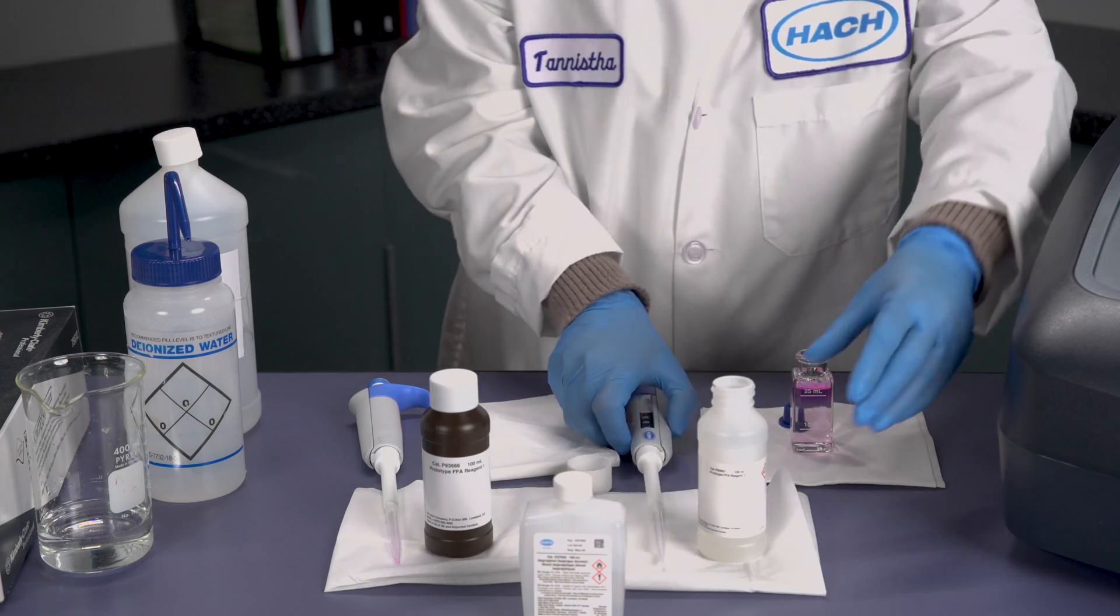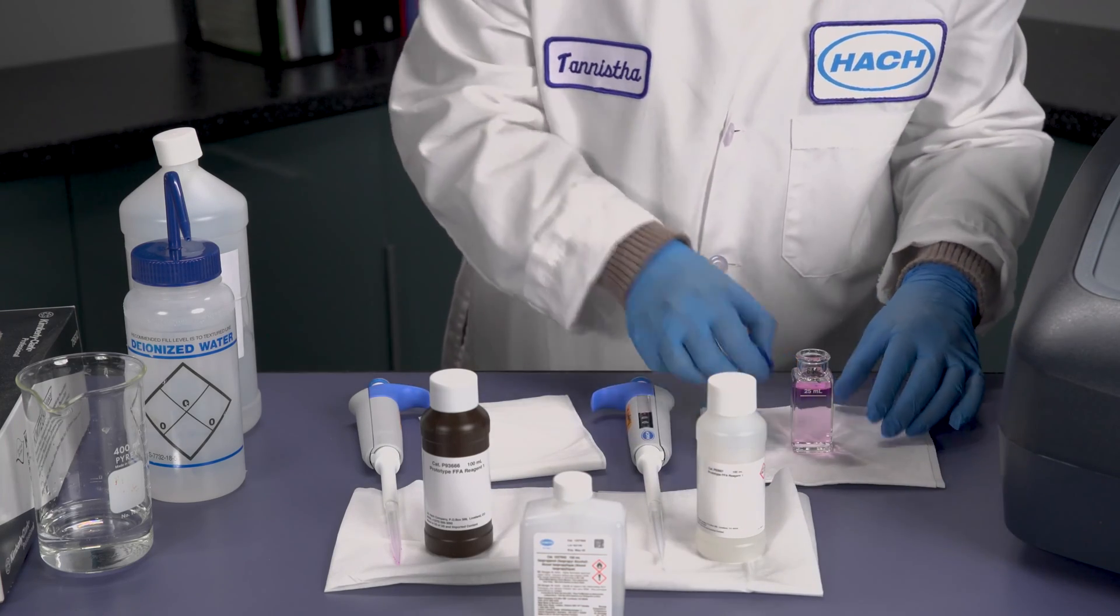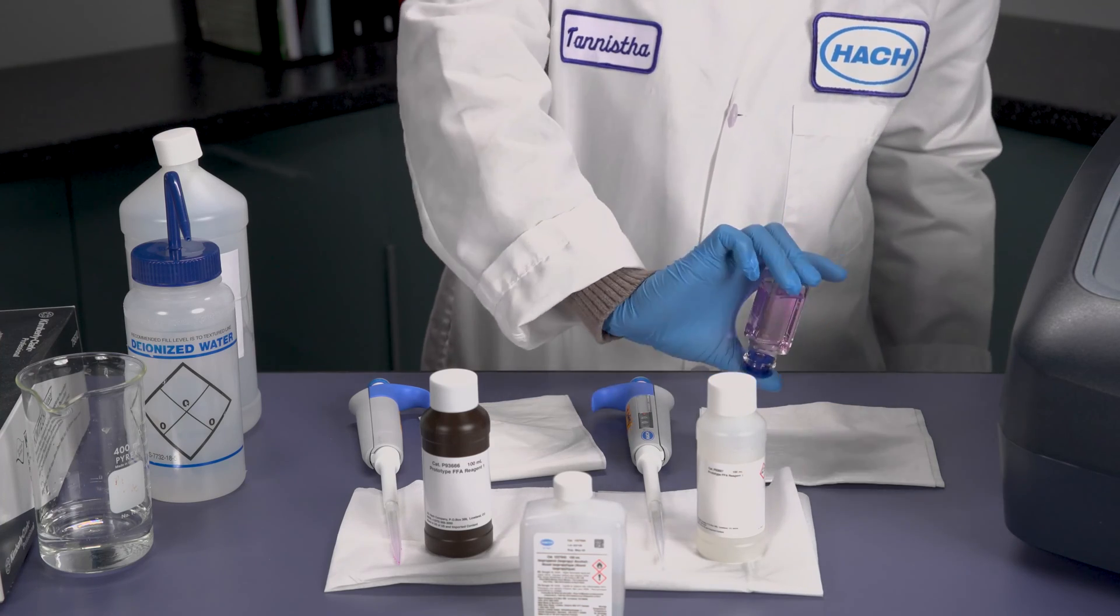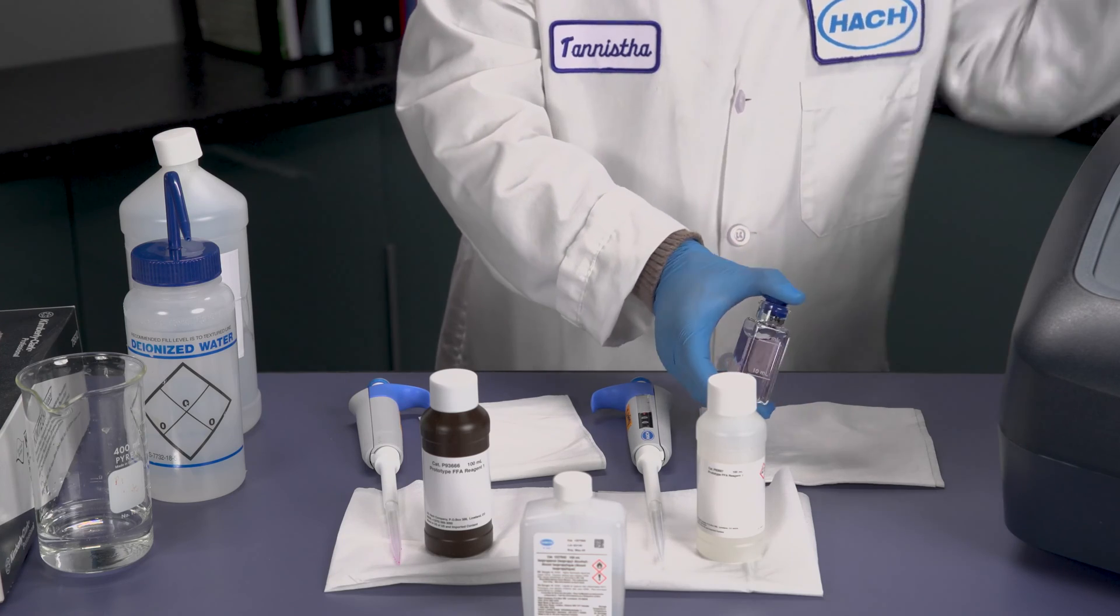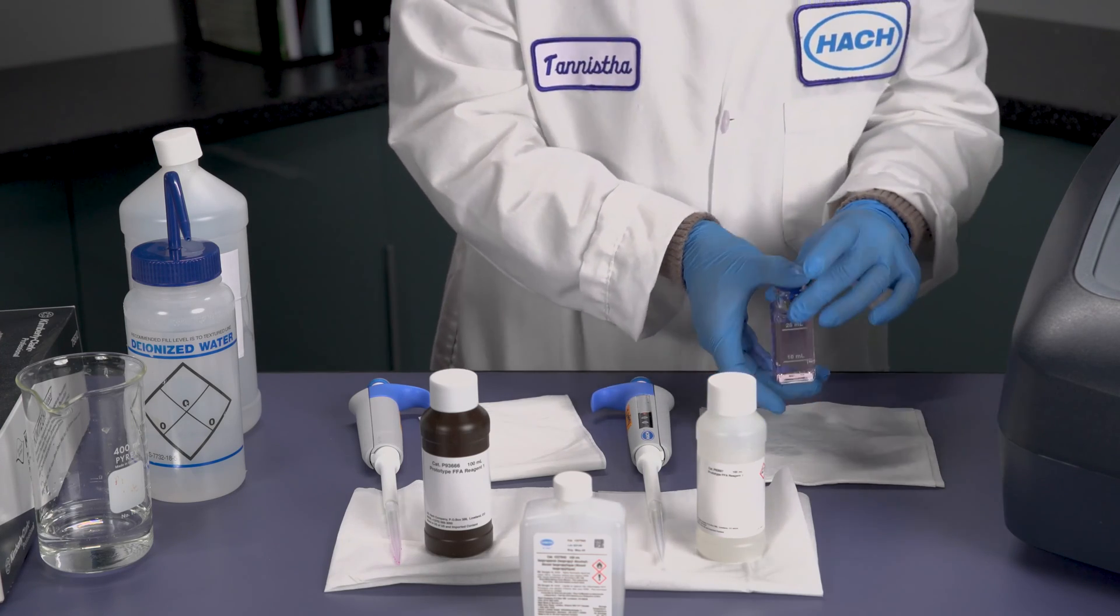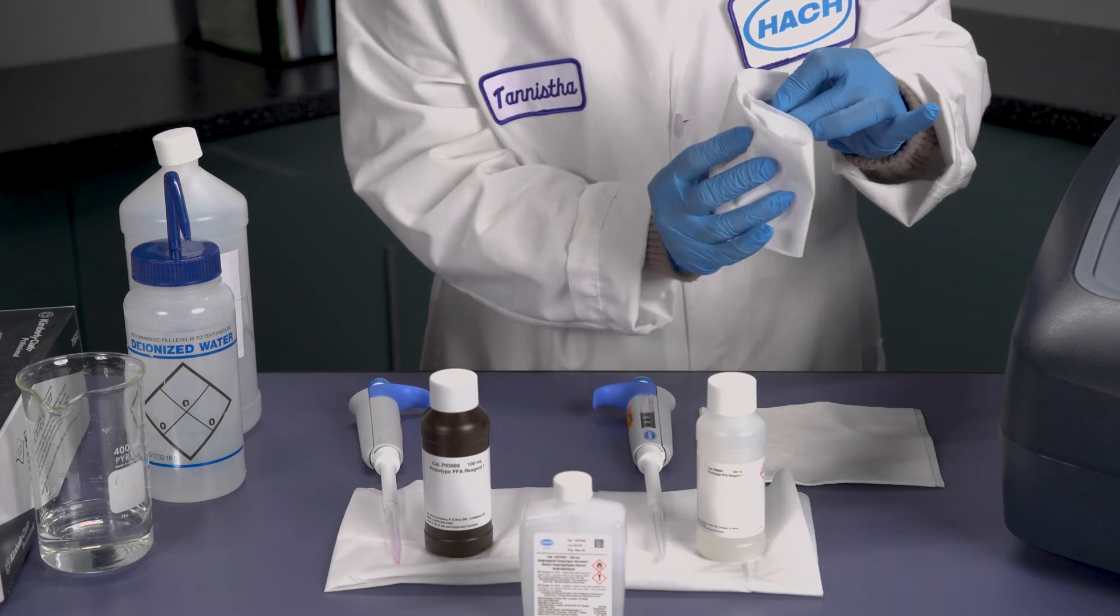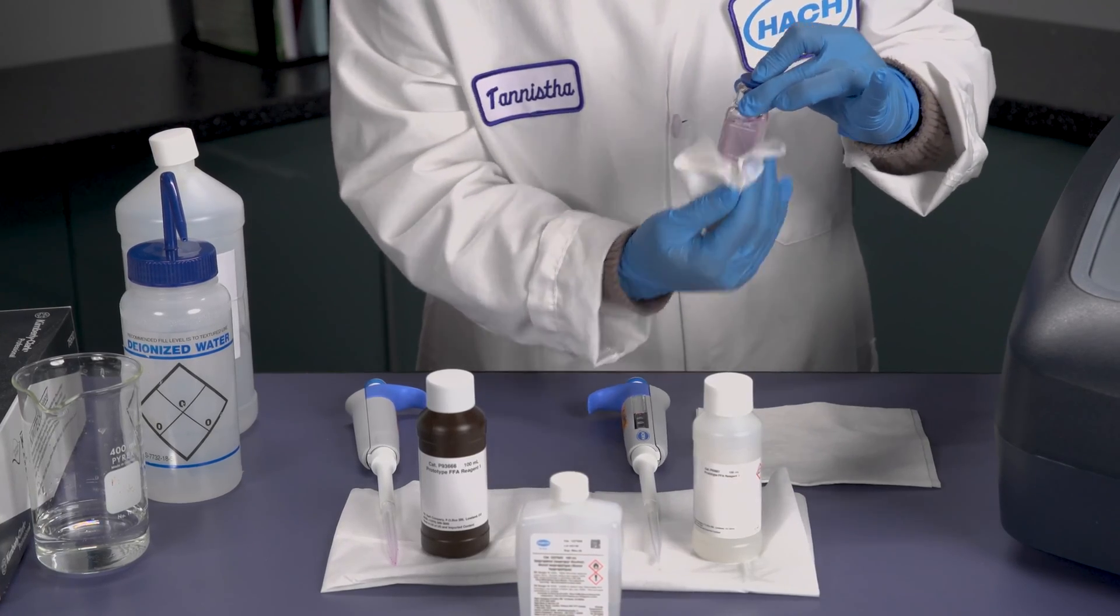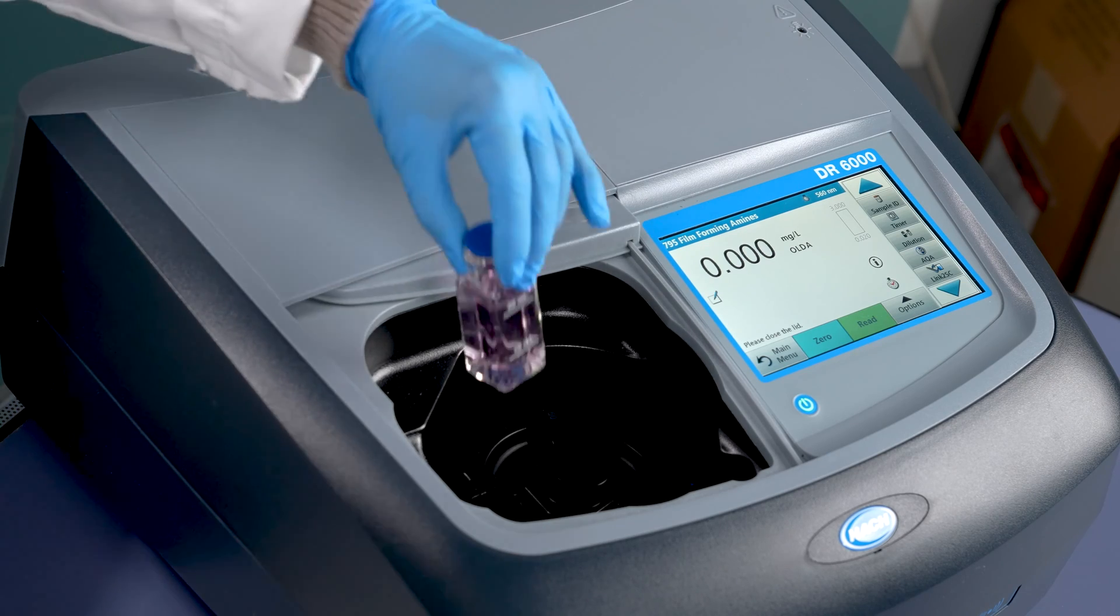Once the two reagents have been added, we will now add the rubber stopper and we will invert to mix. It is very important not to shake this sample. Only invert this sample to mix the reagents. Invert this four times for the best mix. At this point, we will set our timer for two minutes as a waiting period to allow the color to fully develop.